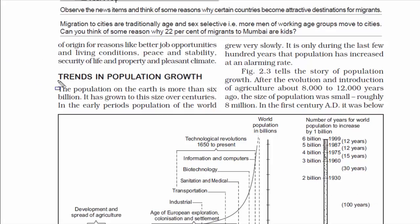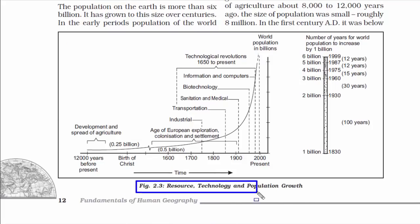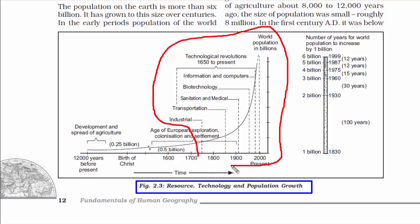Now let's look at some trends in population growth. Currently, the population of the world is over 7 billion. It is only during the last few hundred years that population has increased at an alarming rate. After the 18th century, population growth took a massive jump, because most developments like the industrial revolution, transportation, medical advancement, biotechnology, information technology, and computers were all in full swing. Due to this, life expectancy increased, standard of living improved, and mortality rate decreased, causing world population to explode after the 18th century.